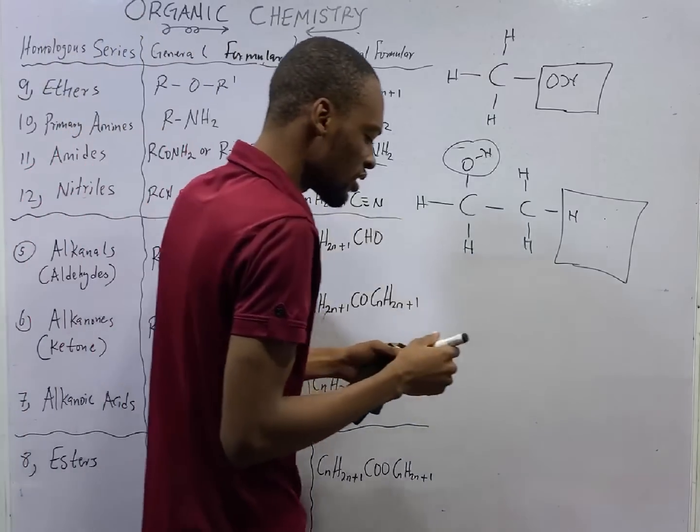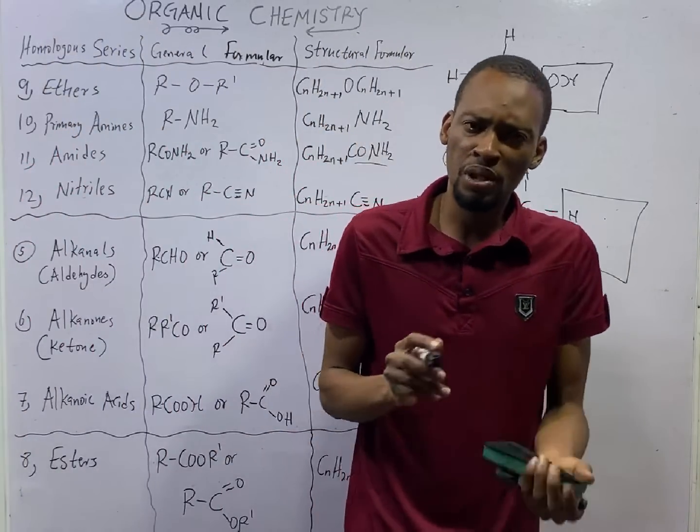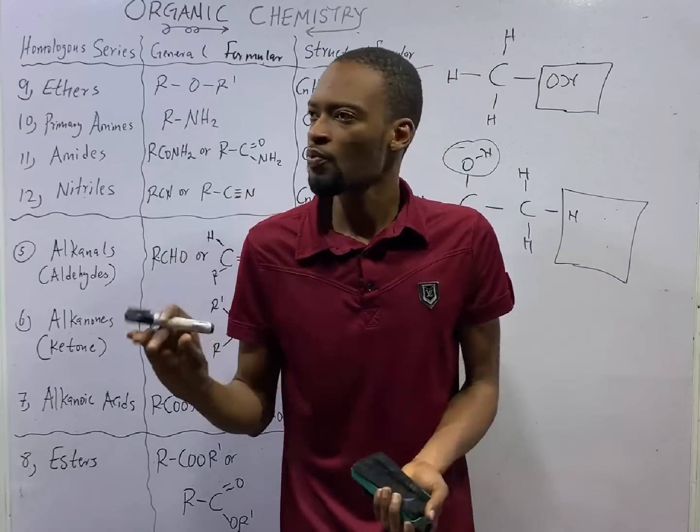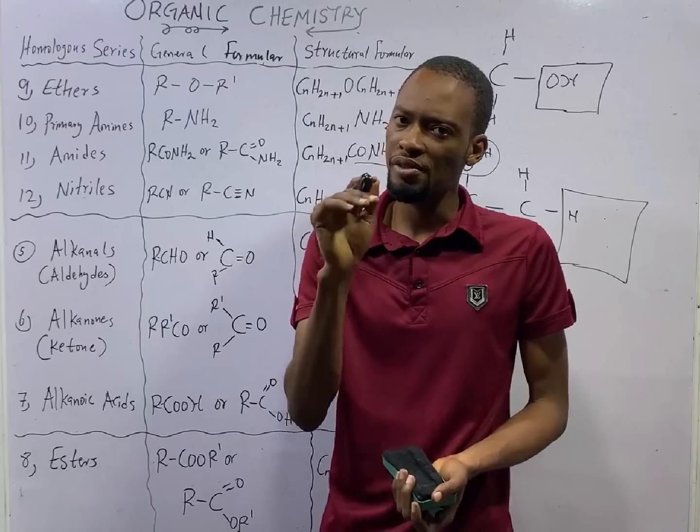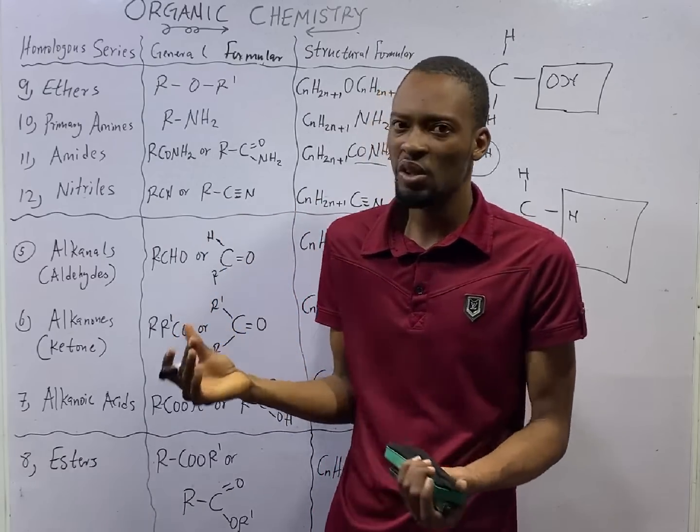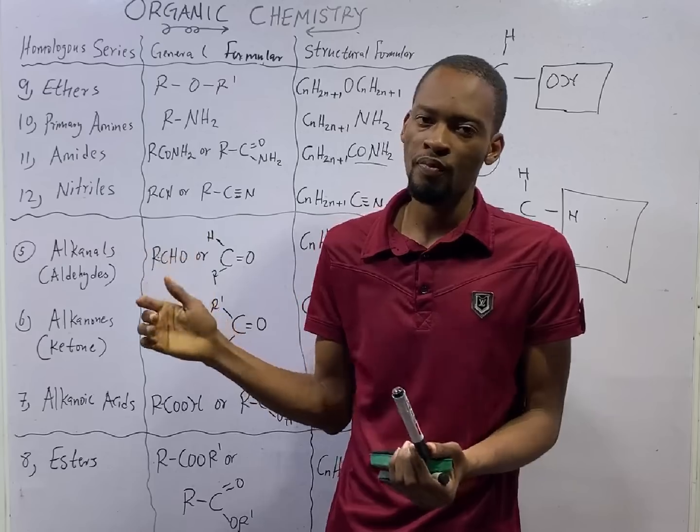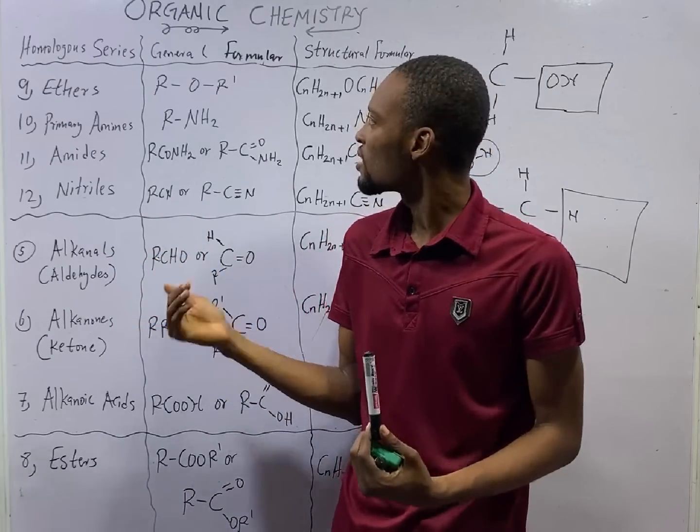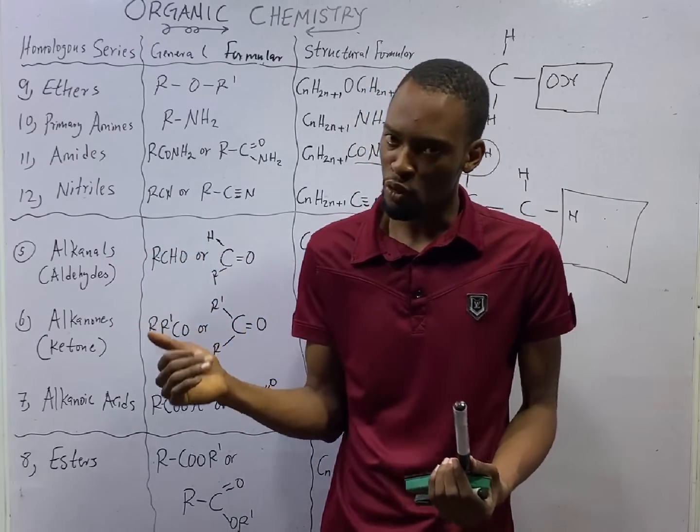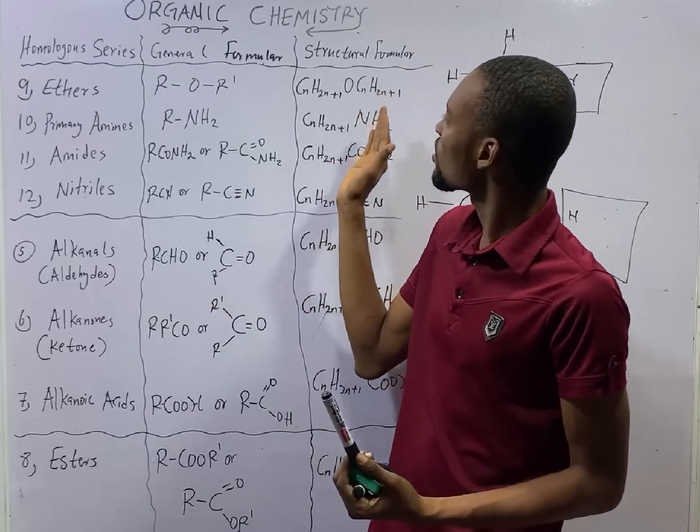And we said that for alkenes, the functional group is double bond. For alkynes, the functional group is triple bond. Then for alcohols, the functional group is OH. And the general formula is ROH or CnH2n+1OH, which is the structural formula.